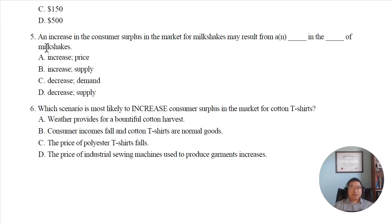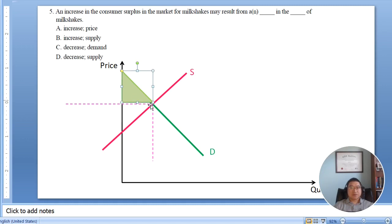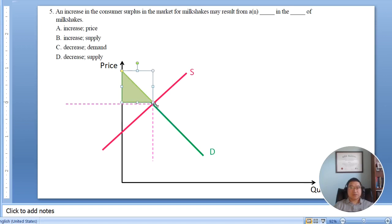Let's look at question five: an increase in consumer surplus in the market for milkshakes. This question asks about any reason that can cause an increase in consumer surplus. The question gives us four different reasons to consider. What we're looking for is this consumer surplus triangle — can it become bigger? That represents an increase in consumer surplus.